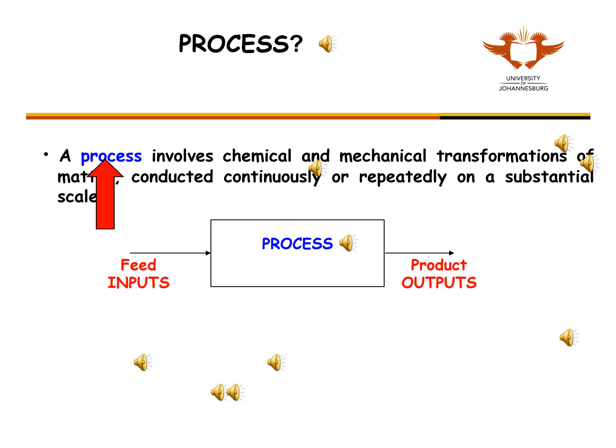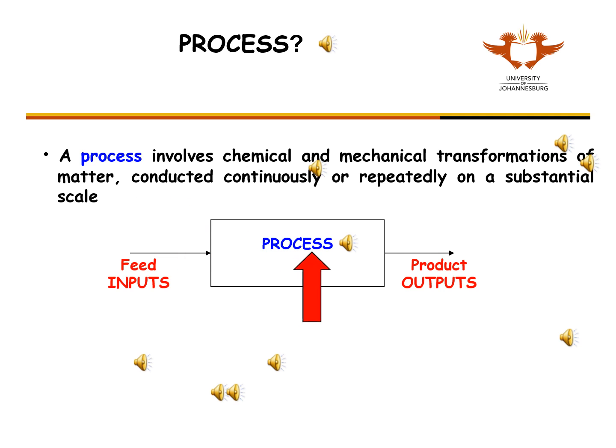A process can, for example, happen inside a chemical reactor, and is represented by a box in this diagram. An example of a transformation could be a chemical reaction, or the heating of a fluid.